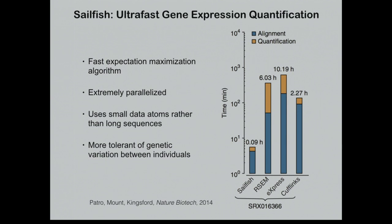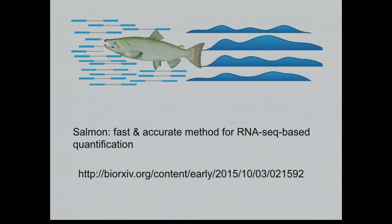Sailfish's key idea was to eliminate the step of read alignment, which was typically very slow. All previous methods relied on starting with an alignment of the reads to the transcriptome as the basis for inference. Sailfish argued you could replace this alignment step with something much simpler — really just counting k-mers that match the reads and the transcriptome — and get similar accuracy much more quickly. What I want to talk about today is our subsequent work improving both the speed and accuracy of Sailfish in a method we call Salmon, which you can read about in a preprint.